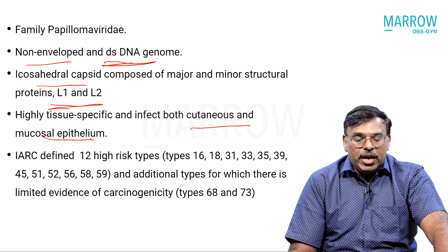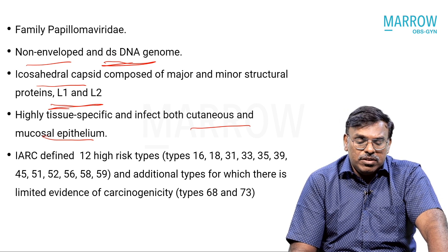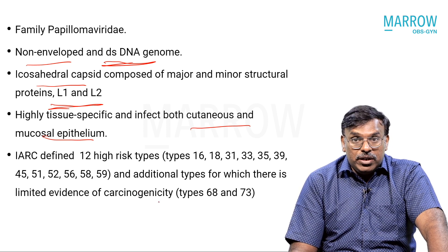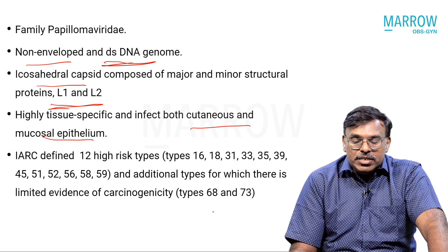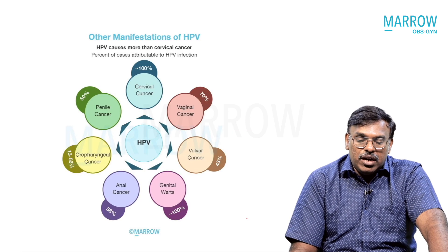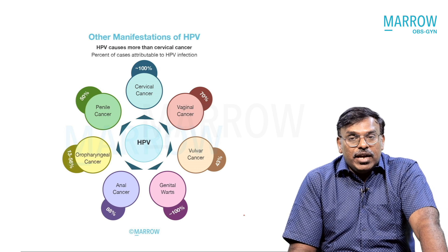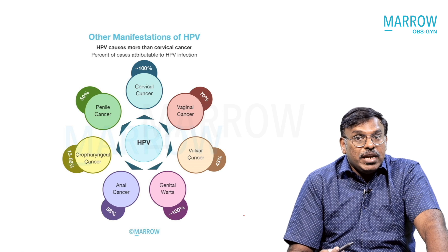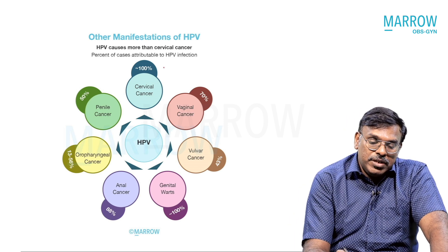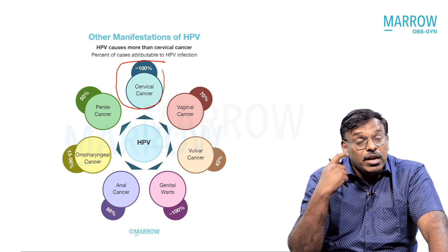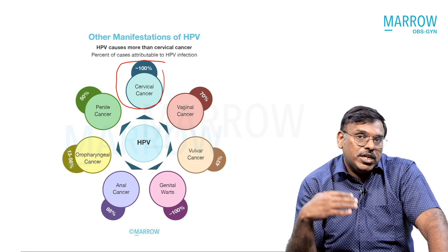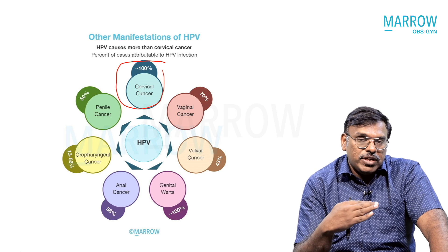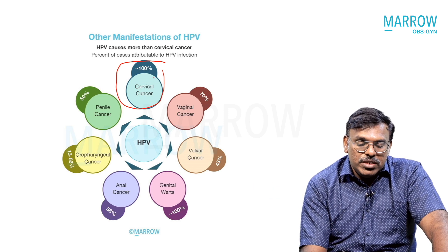The International Agency for Research on Cancer has defined 12 high-risk types based on carcinogenicity, and additional types like 68 and 73 have also been added to the carcinogens list. HPV viruses are both tissue-specific and more predisposed to affecting the cutaneous and mucosal epithelium. Structures that have a mucocutaneous junction are more predisposed to HPV infection, which is why nearly 100 percent of cervical cancers are caused by HPV.